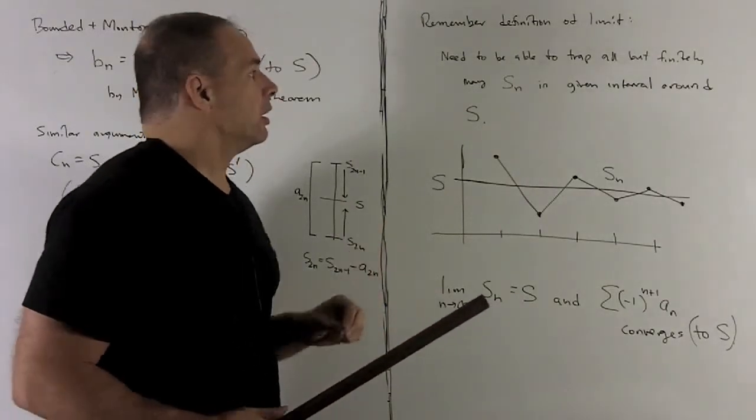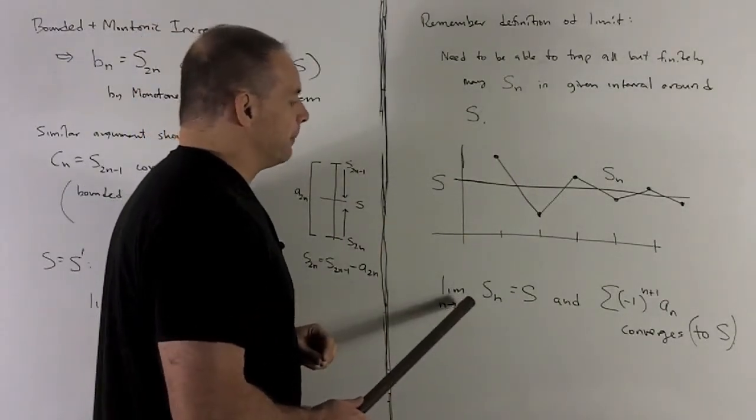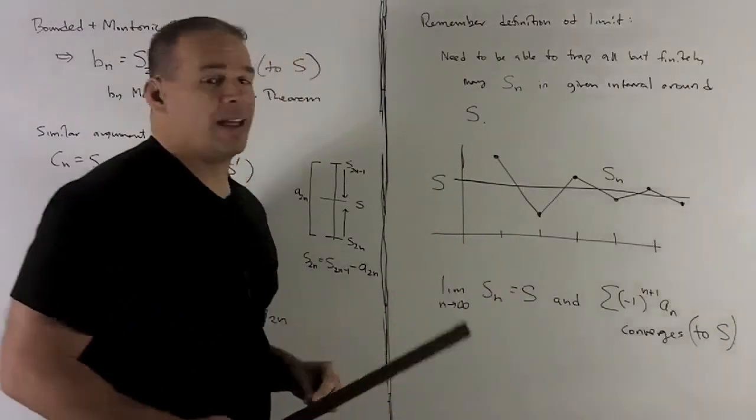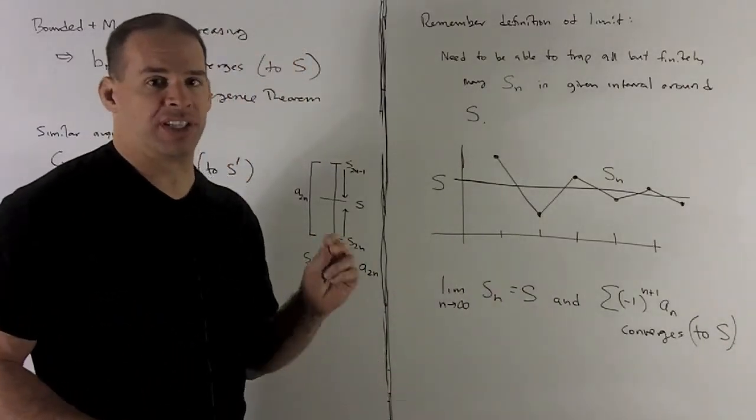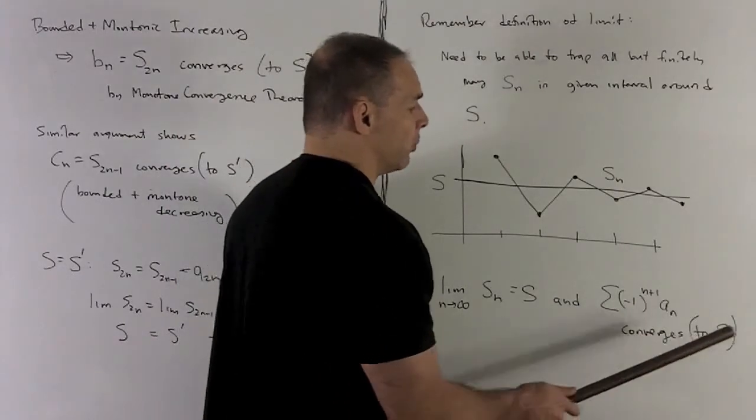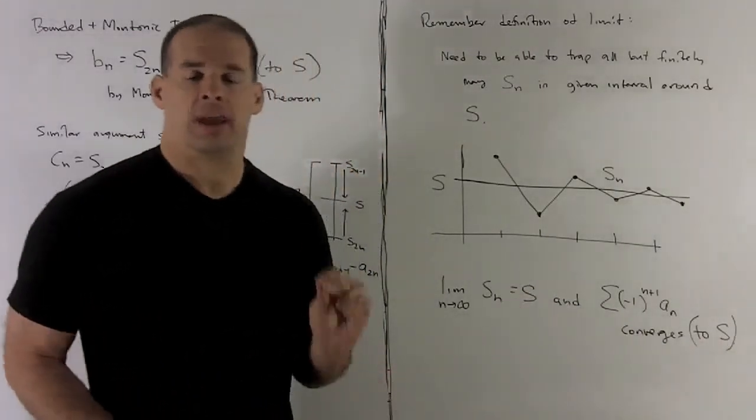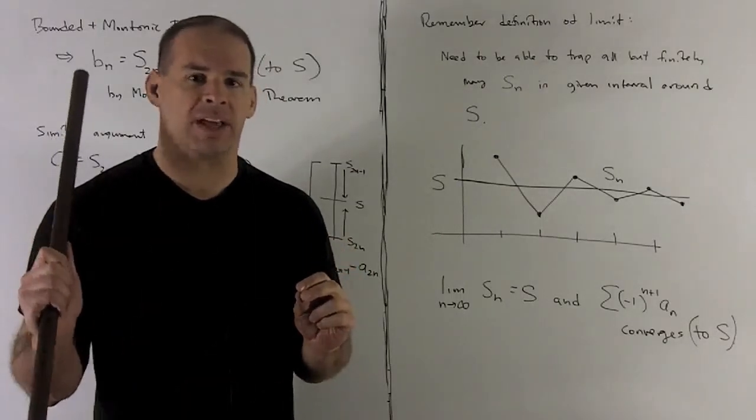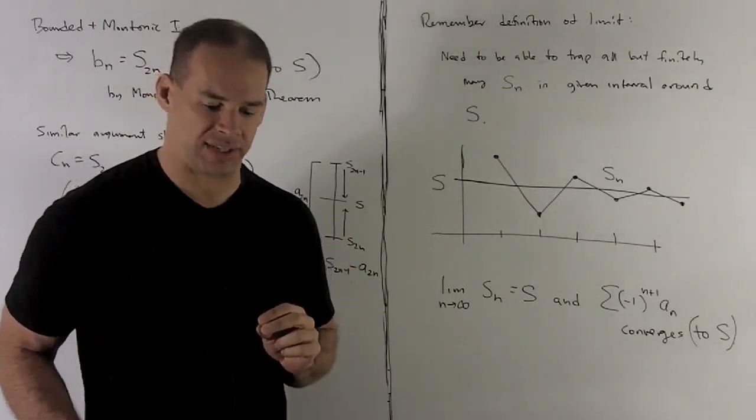So that's going to mean the limit of the s_n's as n goes to infinity are going to be equal to s. That's my definition for convergence of the series. So my alternating series is going to converge with limit s, which in practice we don't know. But for the purposes of this, it's just enough to know that it exists.